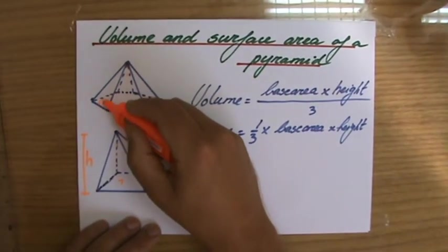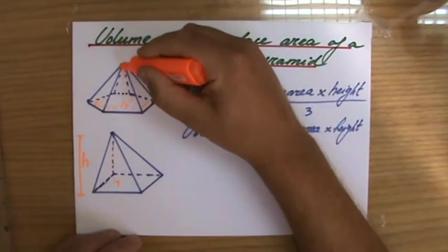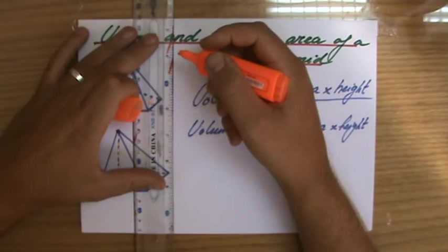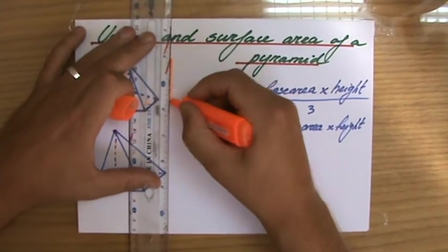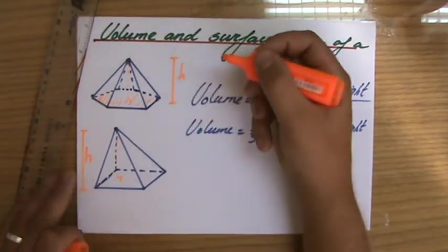To calculate the volume I would calculate the area of the base, and then I would times it by the height which is the perpendicular height, and then I would divide the whole thing by three or times it by a third.